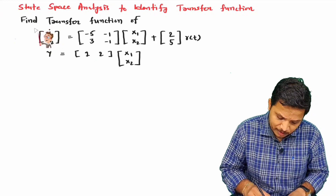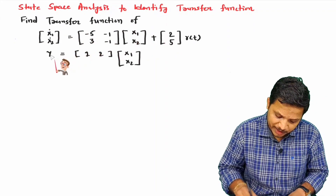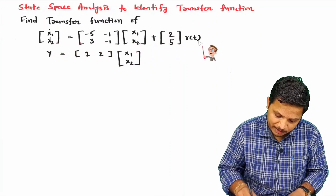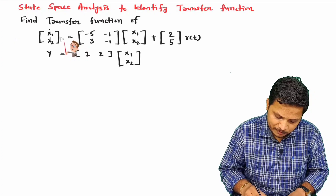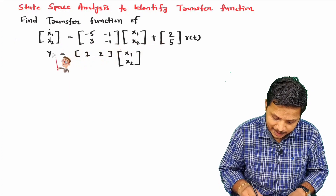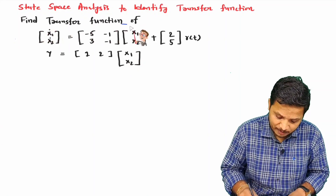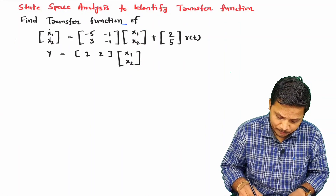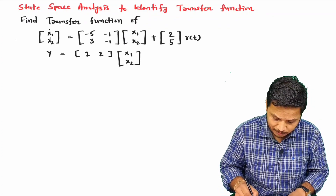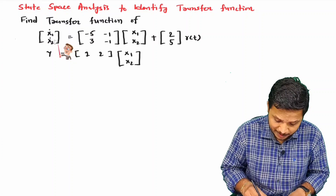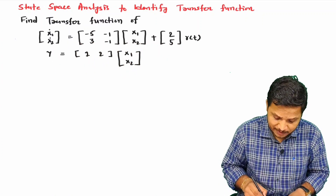So you can see in the equation here, we are required to find the transfer function from these two state equations — the first equation is the state space equation, and the second equation is the output equation. To find the transfer function, we need all the matrices associated with the system, and for that we will be comparing these two equations with the standard reference equations.